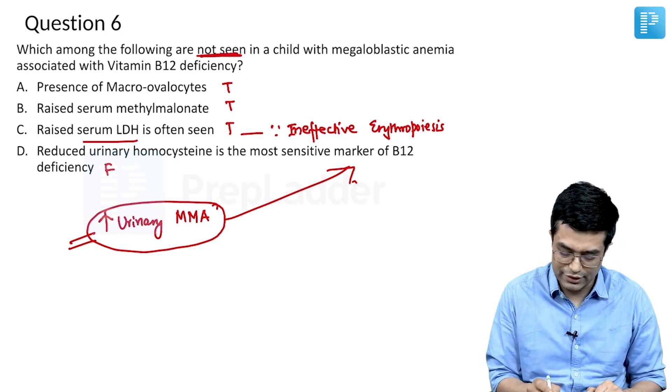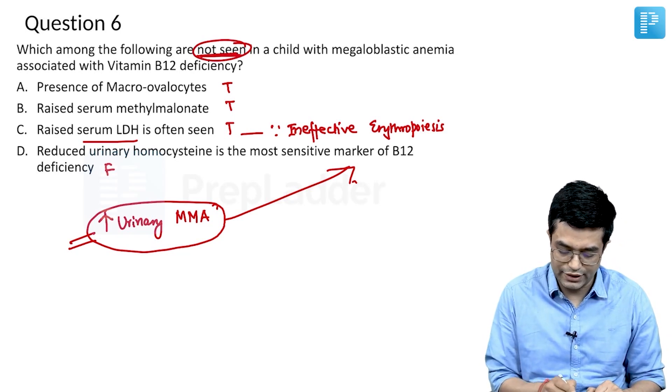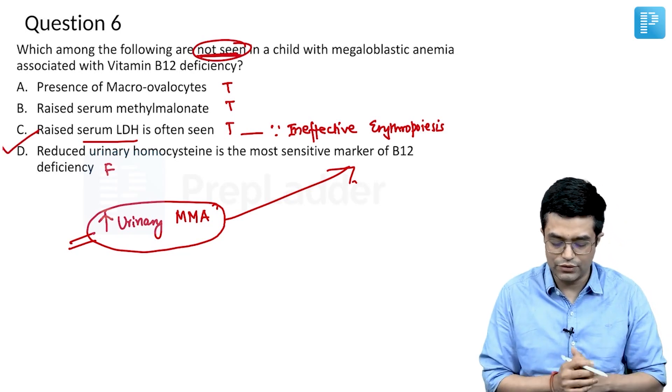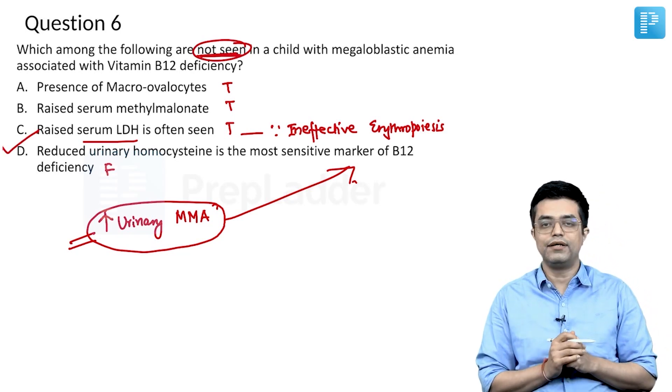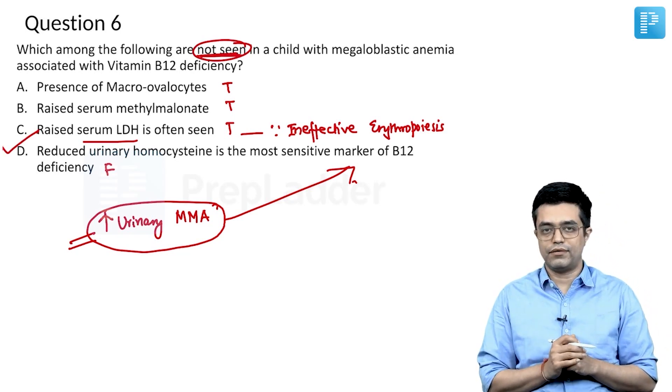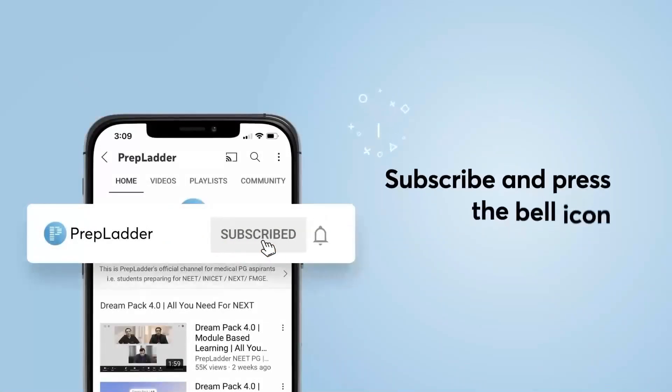So by exclusion, they are asking what is NOT seen, and the answer to this question is option D — reduced urinary homocysteine.